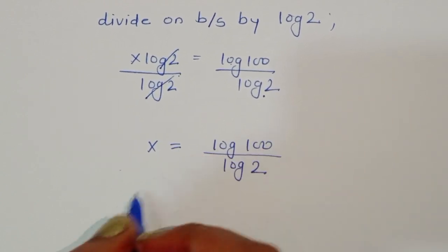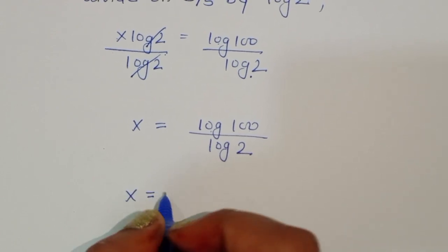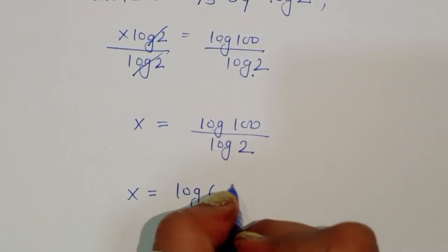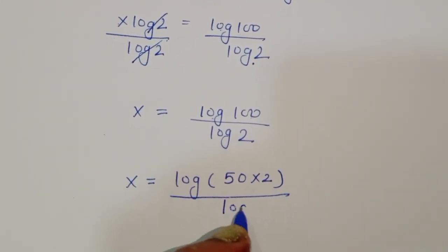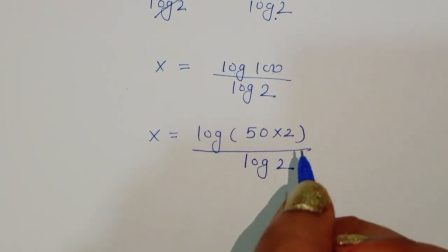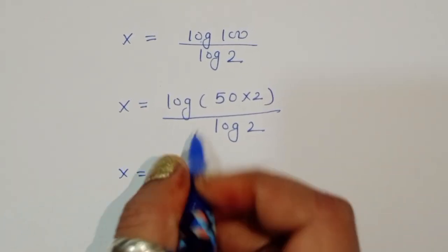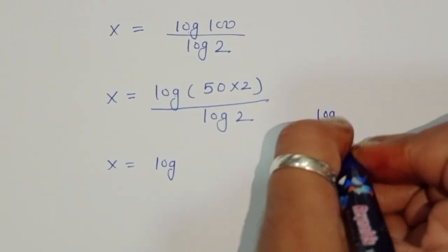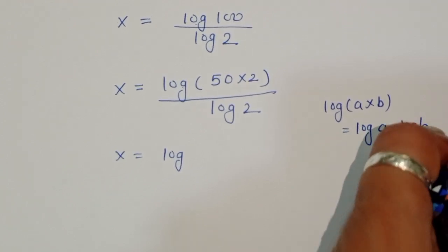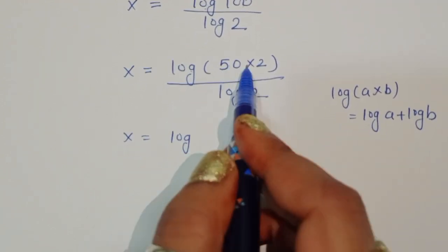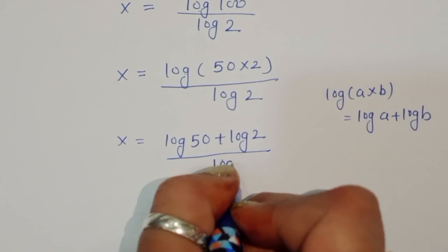Now we can write log of 100 as log of 50 times 2. Using the formula log(A×B) = log A + log B, we get x equal to log of 50 plus log of 2, all divided by log of 2.